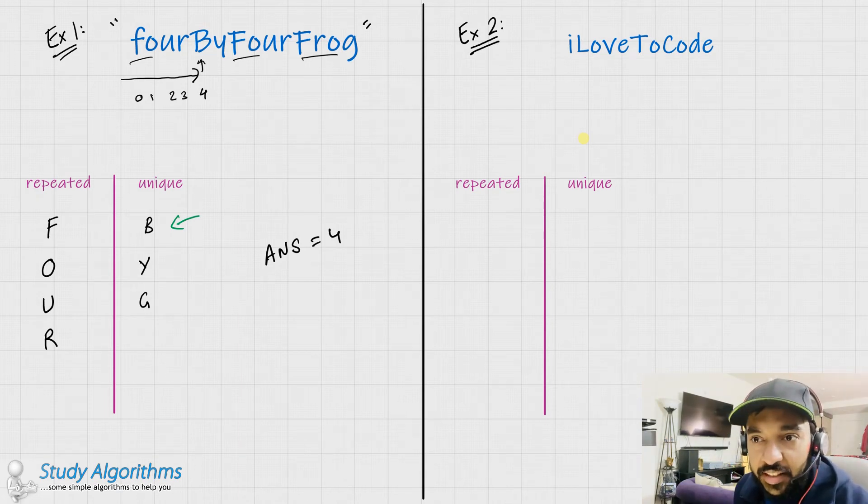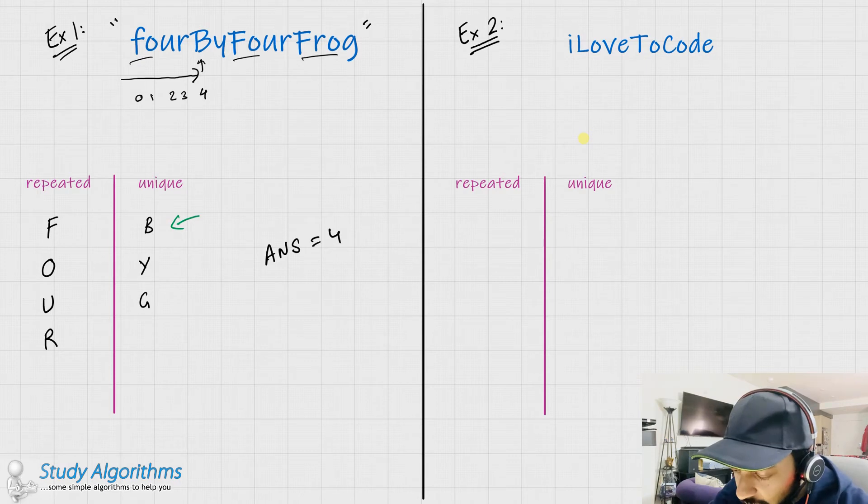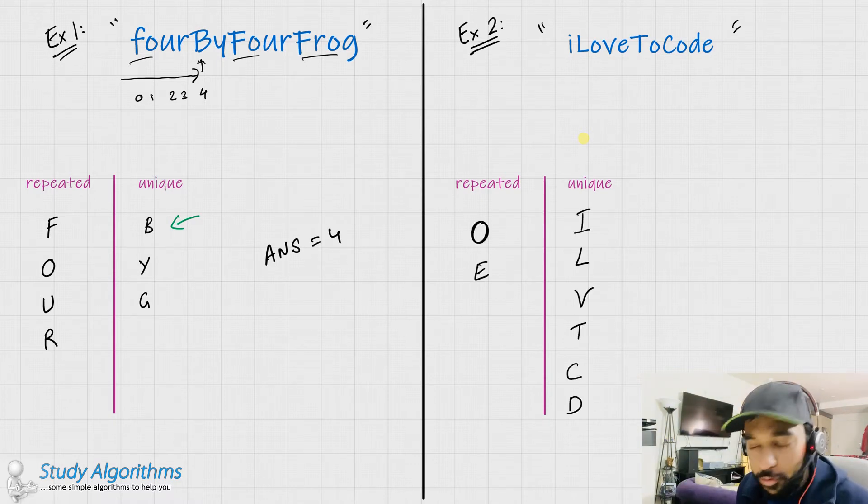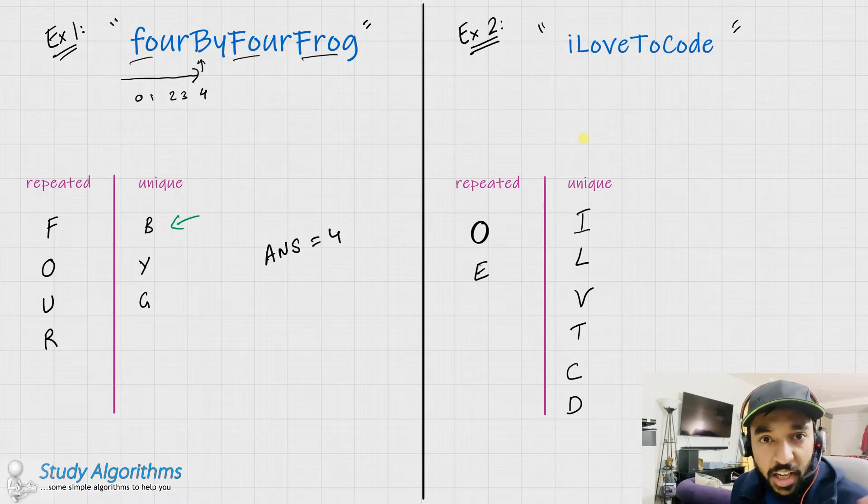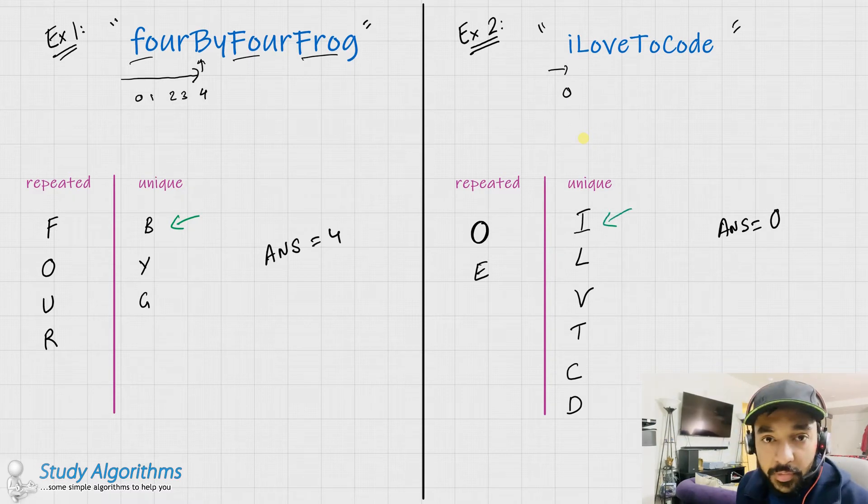It is not necessary that the unique character would occur somewhere between the string. It can also appear even at the beginning of the string. To show you, let me just show you one more example. Here I have example number 2 with the string given as I love to code. So, over here, I will just list down all the repeated and all the unique characters. In this case, we had a lot of unique characters. But nonetheless, if I start traversing from the left, the first unique character that I would find is i, and its index is 0. And hence, the answer for this case would be 0, because i was your repeating character. If you ever get a case in which none of the characters is unique, then you just need to return minus 1.